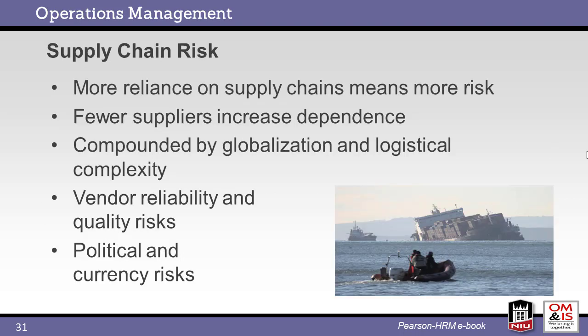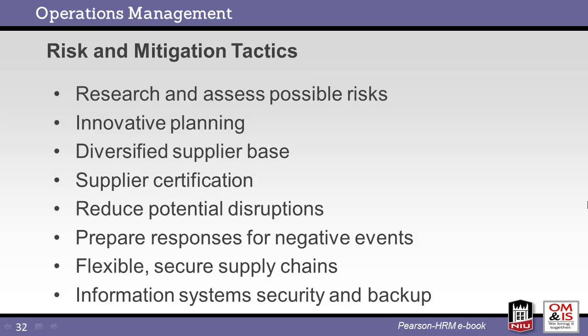Reliance on global supply chains has risk. Global politics and logistics challenges may reduce the value of the relationship. Language differences and currency valuation may also have an impact. Distance makes verification difficult as well. To mitigate these risks, several tactics may be applied, including diversification, certification, and flexibility. There will be more variability with global shipments than local shipments, which calls for thorough planning and contingencies. Don't forget the importance of information flow across the supply chain — system security, redundancy, and backup are necessary.